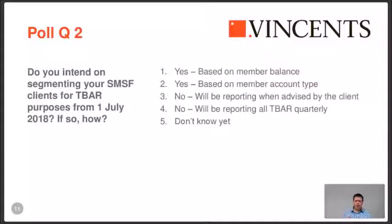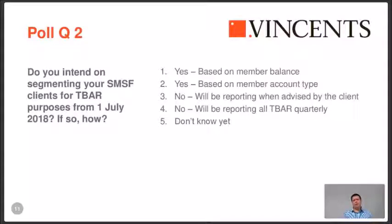Consider this scenario: a client wants to start a pension on 1 June 2018. There's no requirement to take a minimum pension, so they might not necessarily have a dollar amount to flag. If they've got over a million dollars, you then have to process the full year's worth of fund data so you can report the TBAR correctly with the right components. What about the situation where an advisor says they're starting a pension on a client? How are you going to handle that?